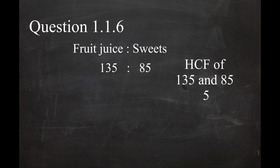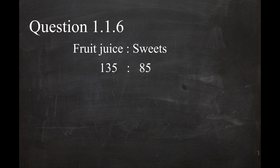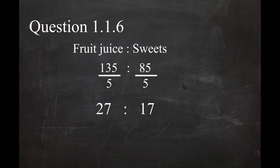It is easy to see that 5 can divide into both 135 and 85 with no remainder. So 135 divided by 5 is 27 and 85 divided by 5 is 17. This gives a simplified ratio of 27 to 17. There is no common factor for 27 and 17 — no natural number other than 1 can divide into both numbers without producing a decimal or a remainder. So the simplified ratio of fruit juice to sweets is 27 to 17.